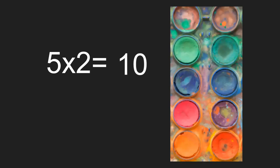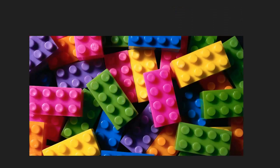What about this array? 5 rows, 2 columns. 5 rows, 2 columns, 10 in all. 5 times 2 equals 10.